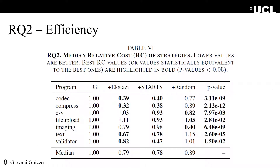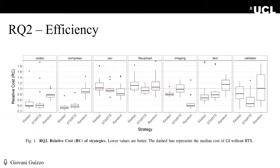For the efficiency gain, we found that RTS was able to reduce the cost of GI by up to 68%. What you're seeing here is the relative cost of the GI process. For 86% of the programs using either Ekstazi or STARTS, we can obtain statistically significant savings with large effect sizes. This box plot shows the cost of each strategy over 20 runs. The red line represents the original cost; values above mean higher cost, values below represent savings. GI with Ekstazi costs on average only 79% of the original cost — a 21% reduction — whereas STARTS reduced it by 22%.